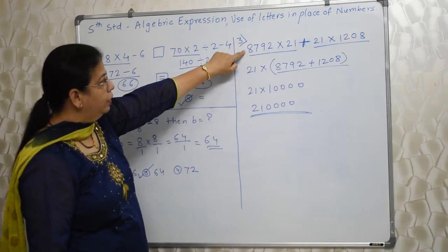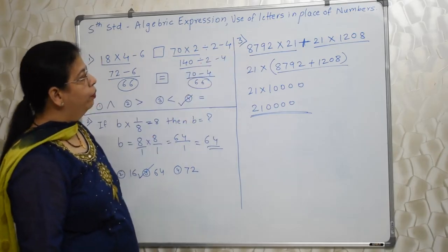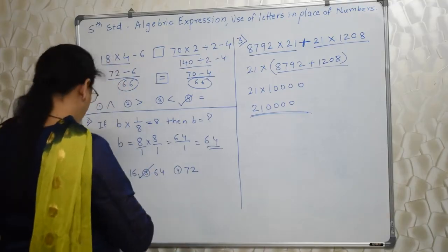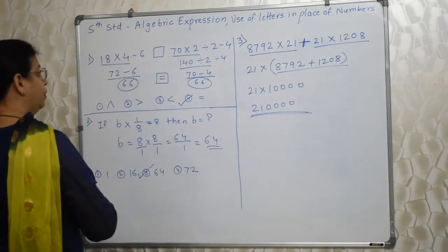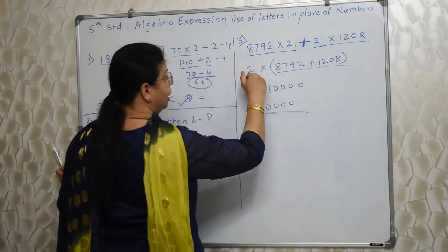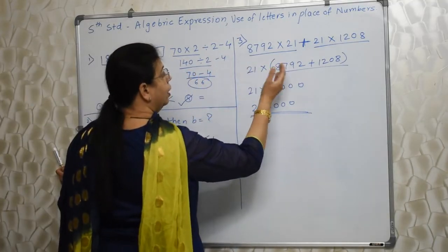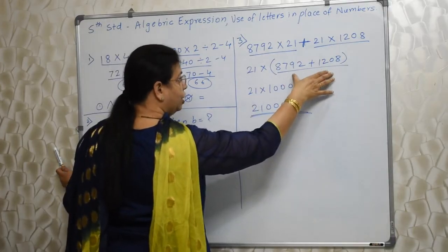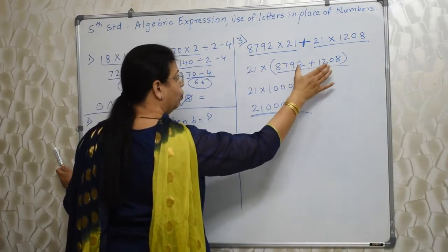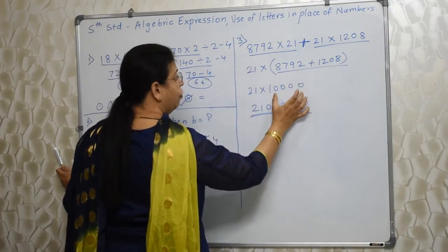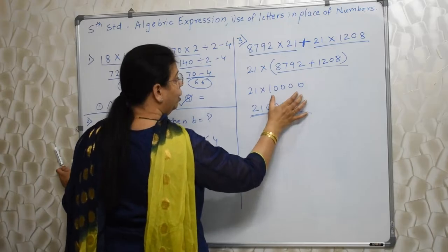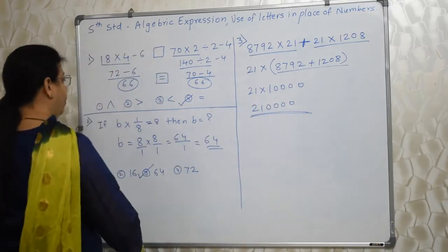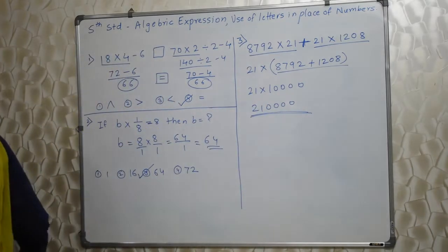Imagine how much time you will waste in case you don't know this trick. You have to observe the numbers — whatever we can take out as common, do that. Inside, whether it is addition or subtraction, it will give you a very, very friendly number. Then you multiply. Very, very interesting.